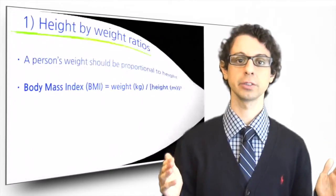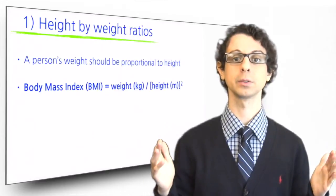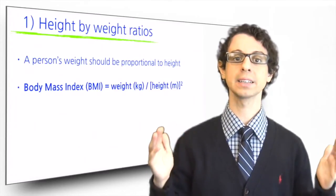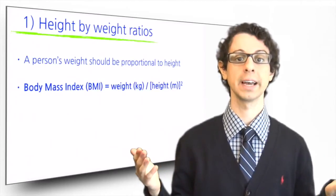Height by weight ratios are rather crude but easy and helpful indicators to gauge the health of one's weight, and they simply reflect the notion that a person's weight should be proportional to a person's height.